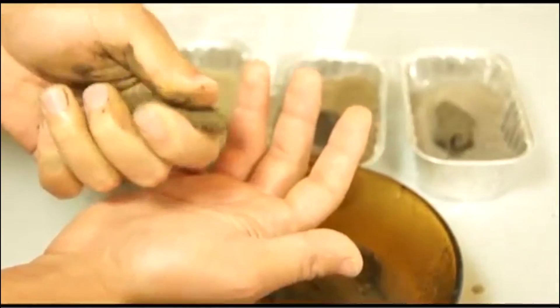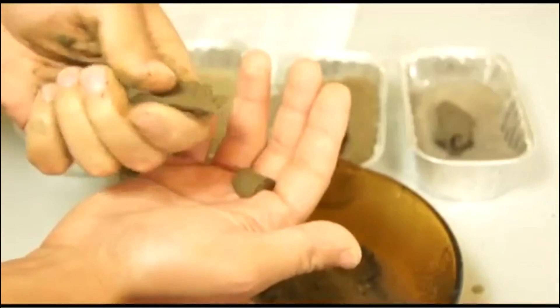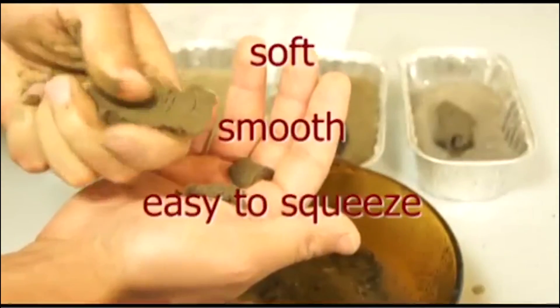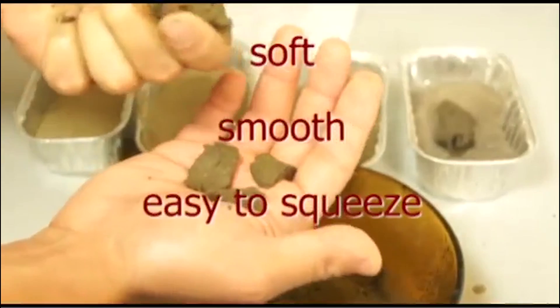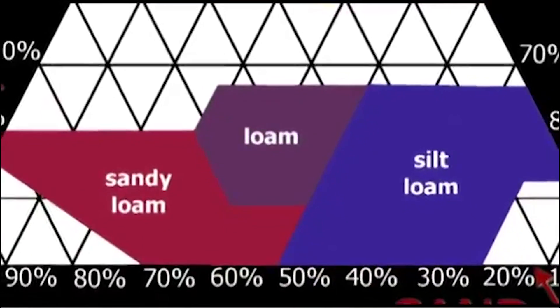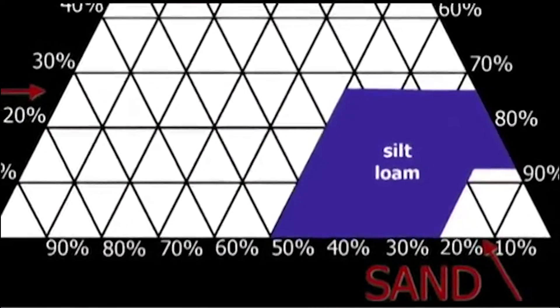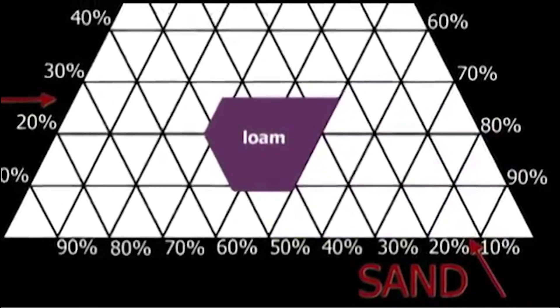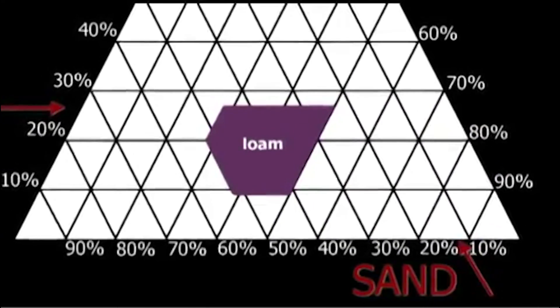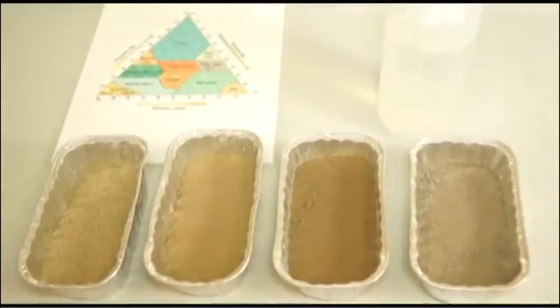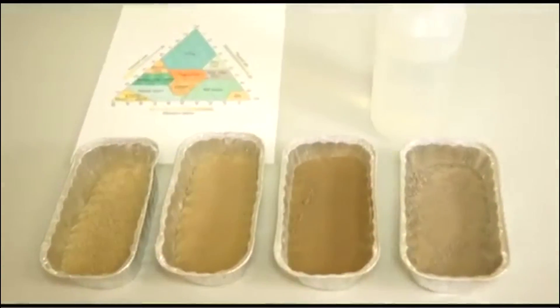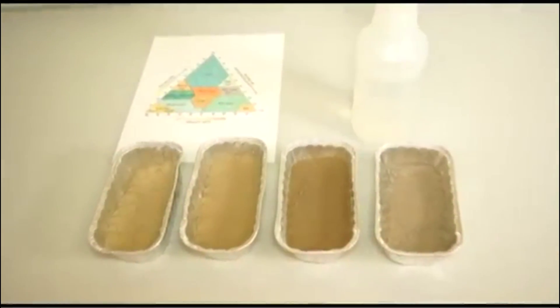If the ribbon breaks at less than 2 cm and is soft, smooth, and easy to squeeze, it belongs at the bottom of the chart. Again, it's either mostly sand, mostly silt, or about equal proportions of both. The best way to learn how to hand texture soil is to practice on soils that you already know the texture of. Ribbon lengths are different for each person and require some calibration.